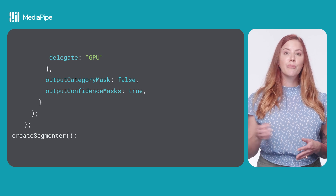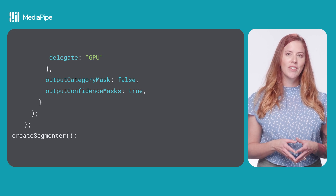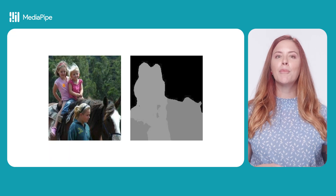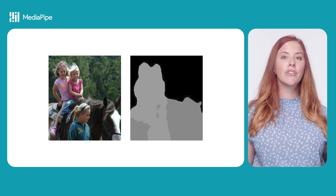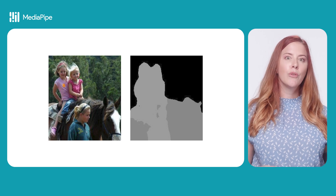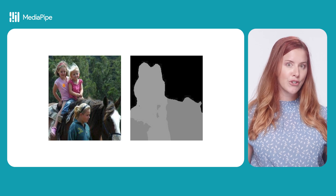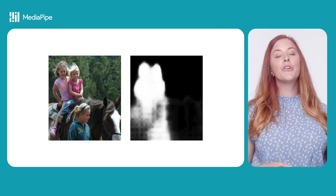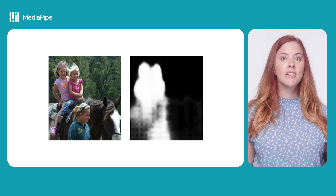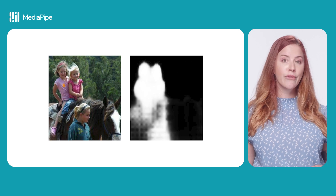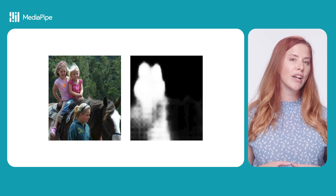You can also provide optional parameters with your initialization. OutputCategoryMask is a Boolean that, when set to true, the output of running segmentation includes a segmentation mask as a Uint8 image, where each pixel value indicates if the pixel is part of the object located in the area of interest. OutputConfidenceMask is a Boolean that, if set to true, the output includes a segmentation mask as a float value image, where each float value represents the confidence that the pixel is part of the object located in the area of interest.